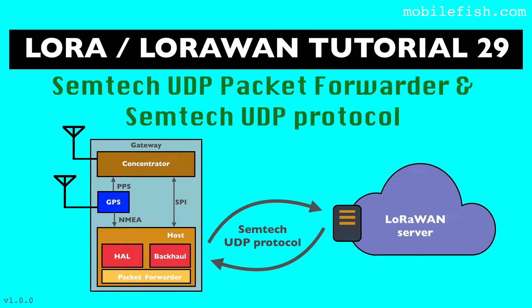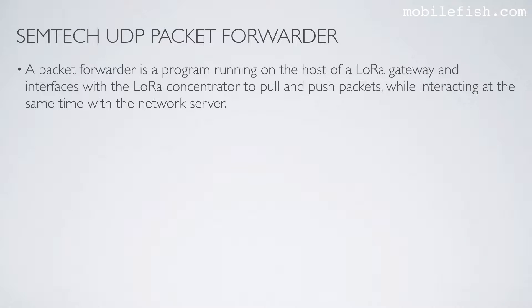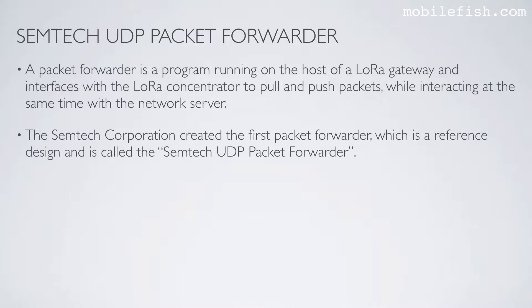In this tutorial I will briefly explain what the Semtech UDP packet forwarder is. I have already explained this in tutorial 28, but the main focus is explaining what the Semtech UDP protocol is. A packet forwarder is a program running on the host of a LoRa gateway and interfaces with the LoRa concentrator to pull and push packets while interacting at the same time with the network server. The Semtech Corporation created the first packet forwarder, which is a reference design called the Semtech UDP packet forwarder.